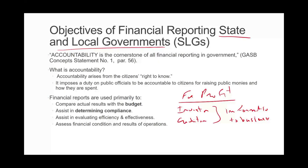For government — either state or local government — the objective is different. Why? For one thing, state and local government, as we mentioned earlier, they don't have owners. They don't have investors. They do have creditors — banks, even people who buy their bonds. But the objective is not to provide information to those users. The objective of governmental reporting is to be accountable.